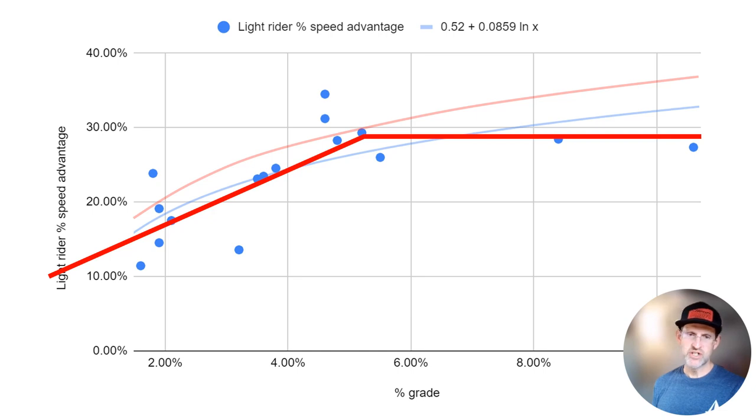It's very interesting that as the grade steepens past five percent, the light rider's advantage doesn't seem to get larger than about 27 percent. This was counterintuitive to me. I would have guessed that the steeper the climb gets, the lighter rider is going to have an increasing advantage over the heavier rider, but that doesn't seem to be the case.